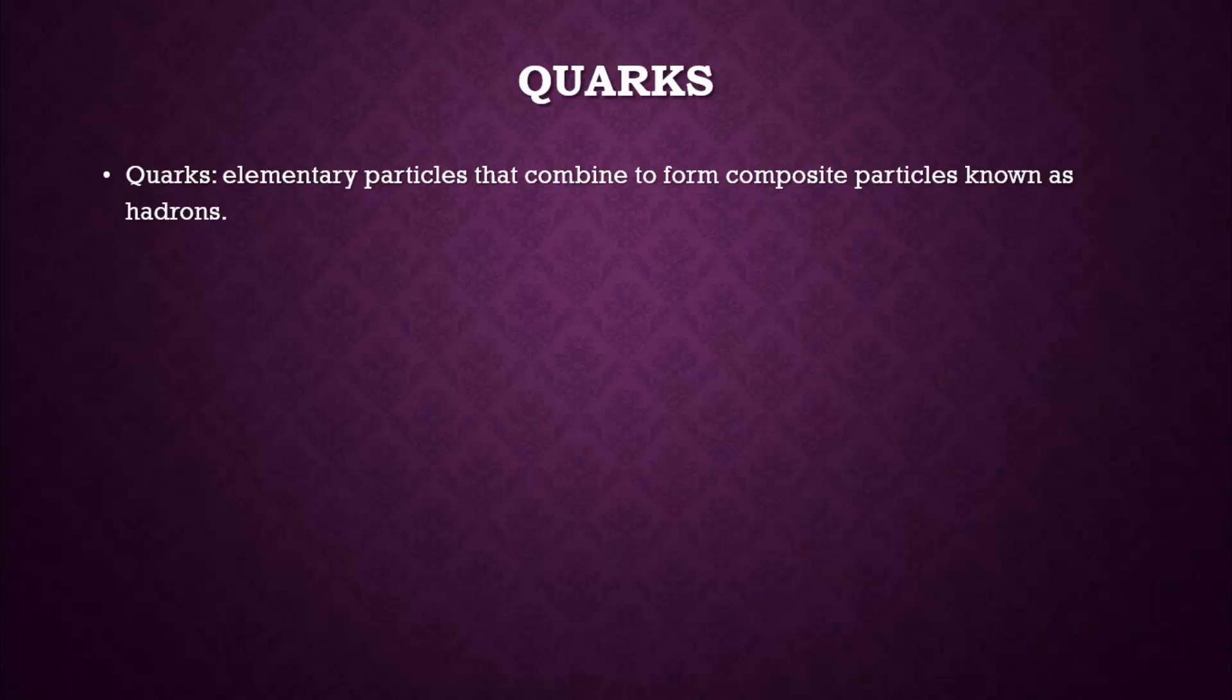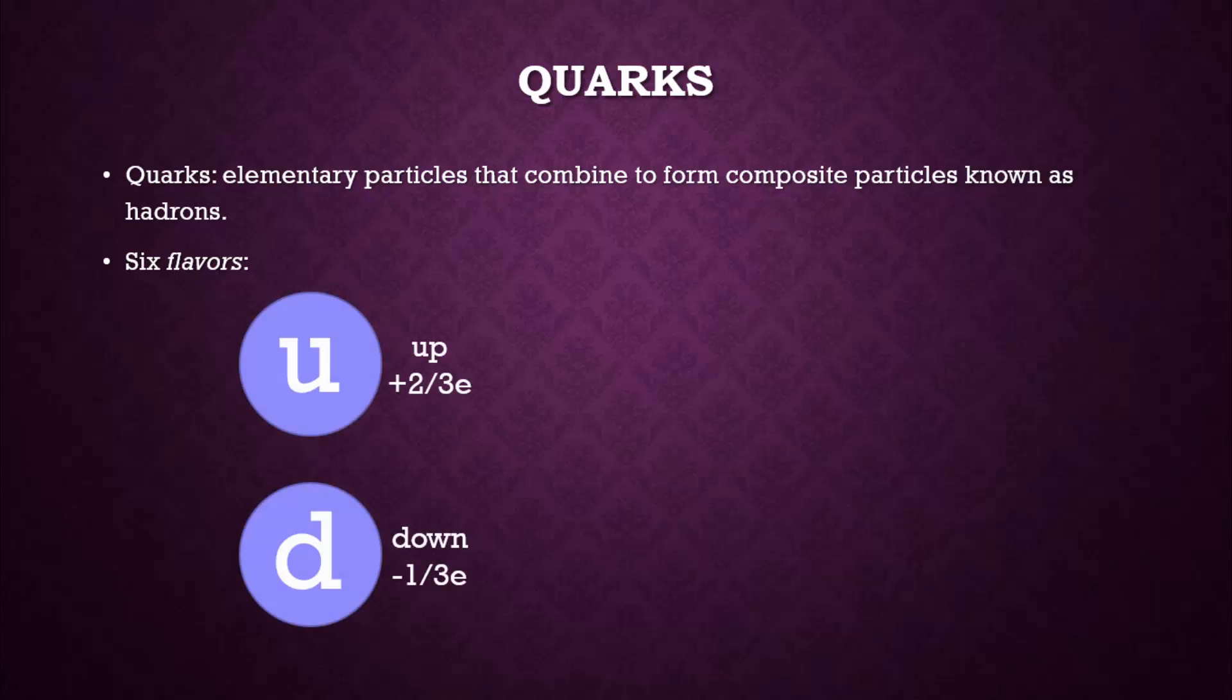Quarks are elementary particles that combine to form composite particles known as hadrons. There are six flavors or types of quarks. The first quarks discovered were the up and down quarks.